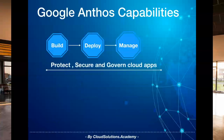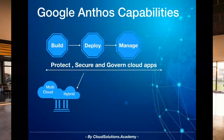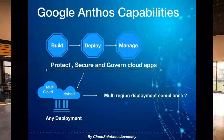The third key aspect Anthos provides is protecting, governing, and securing your applications, and providing tools to address data governance and regulatory requirements. For example, if you are running a cloud application in the Asian region and want to extend it to the UK — where GDPR compliance exists — or to the US — where the California Consumer Privacy Act applies — you need to deploy applications to the right region and ensure data resides there.